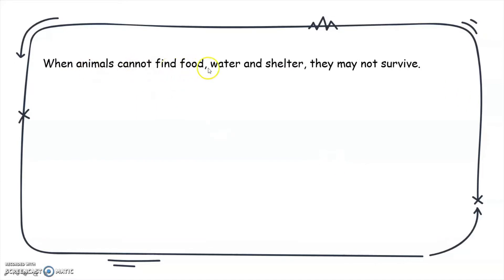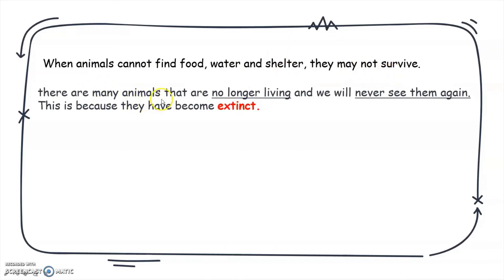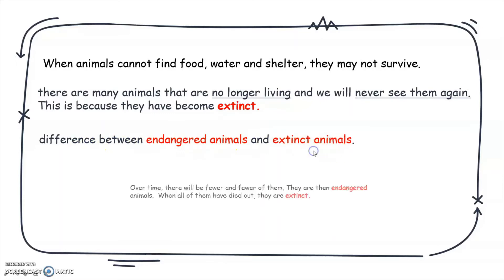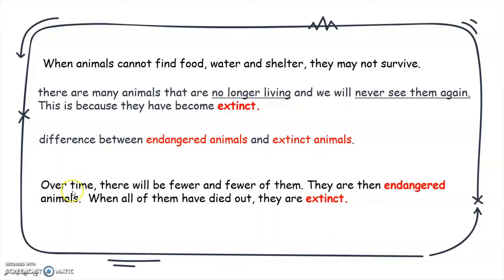When animals cannot find food, water, and shelter, they may not survive. There are many animals that are no longer living and we will never see them again — because they have become extinct. The difference between endangered and extinct: over time there will be fewer and fewer of them — they are then endangered. When all of them have died out, they are extinct.